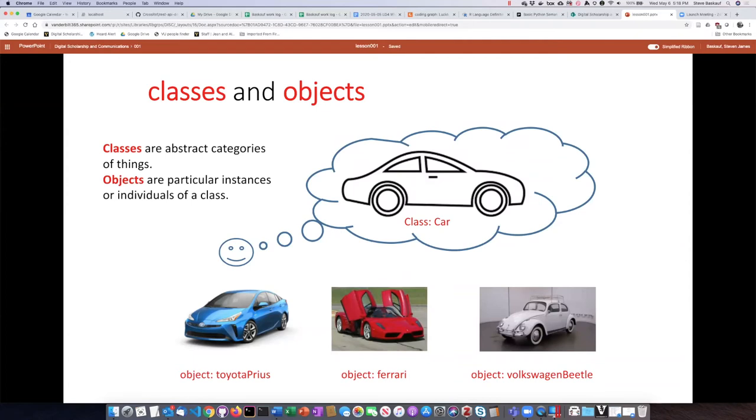An object is actually a particular instance or individual of a class. So we could be talking about a particular car like the car that I drive, or a Toyota Prius, or a particular Volkswagen Beetle. So those are objects that are members of a class.